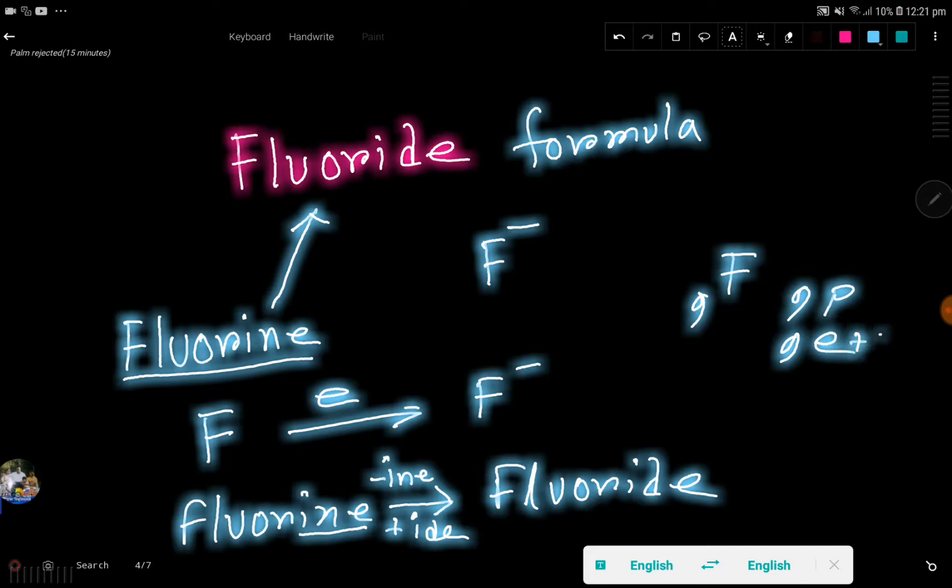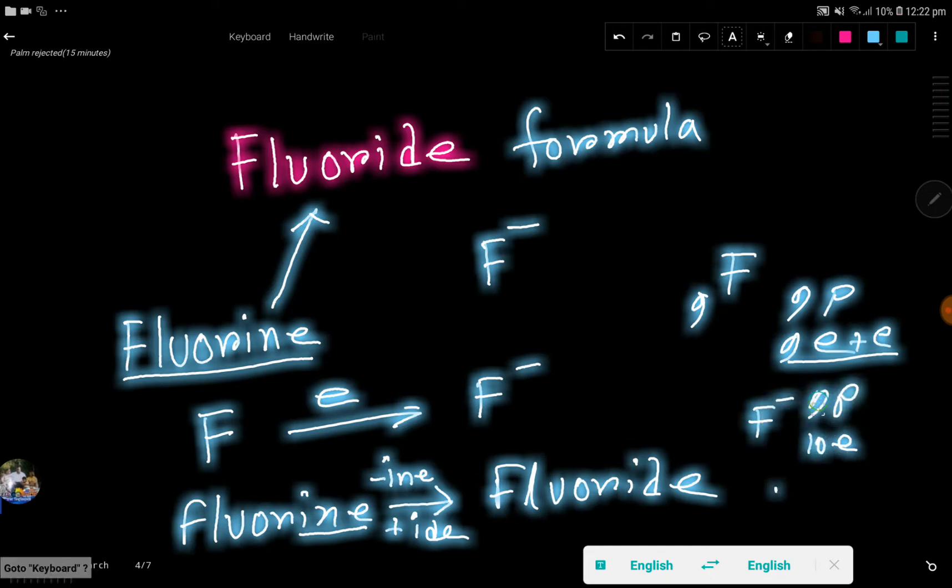10 electrons and 9 protons - one proton will neutralize one electron, but nine protons will neutralize nine electrons. You have one excess electron, which gives the minus charge.